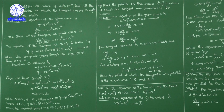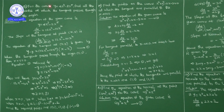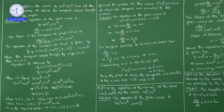Now we are discussing Exercise 6.3. Up to question number 17 completed. Question number 18: For the curve y = 4x³ - 2x⁵, find all the points at which the tangent passes through the origin. You have to find the points on the curve through which the tangent passes through the origin.